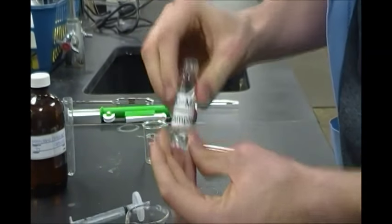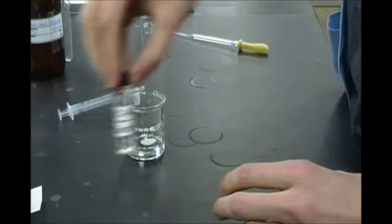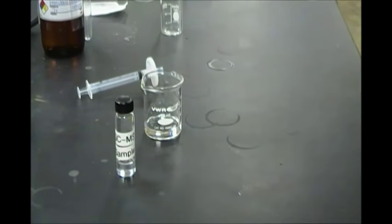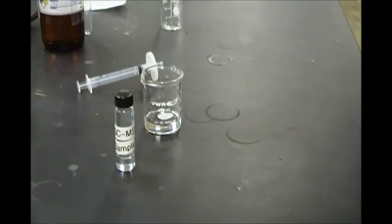Okay, so we filter our sample to remove any solid particles. Those solid particles can damage our GC, get stuck in the detector, get stuck in our column. It can cause a lot of bad problems for our GC mass spec.